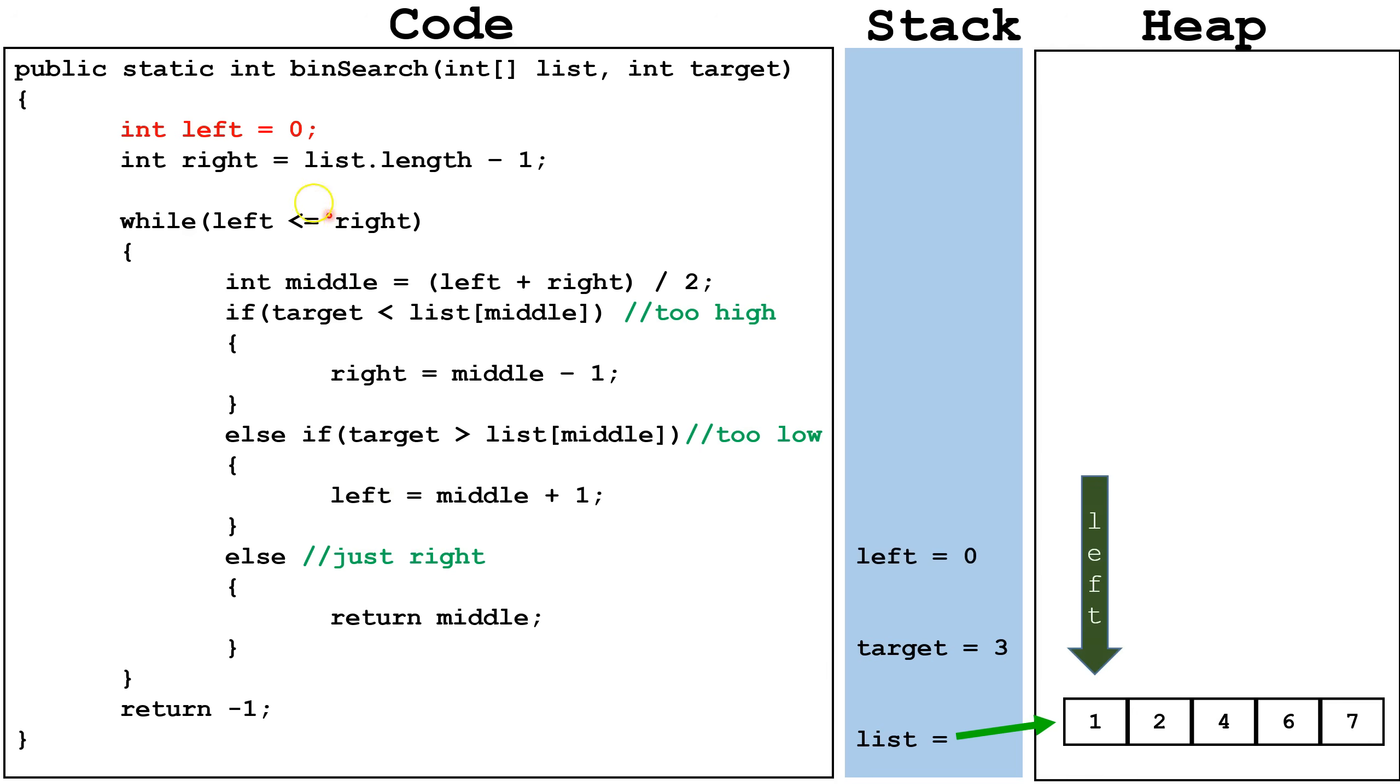On our first line of code, we're going to set our left value to 0 because we're going to be searching starting from our leftmost area. And our rightmost area, we're going to set to 1 minus the list length because we're going to end our search at the end of this array.